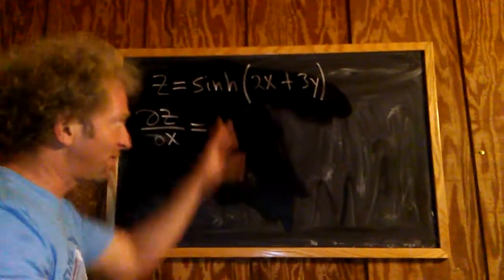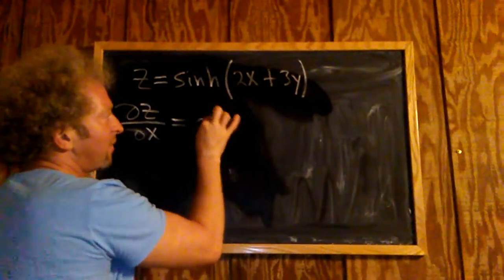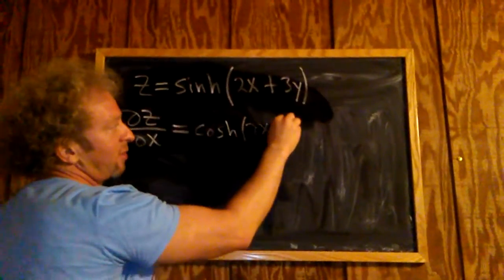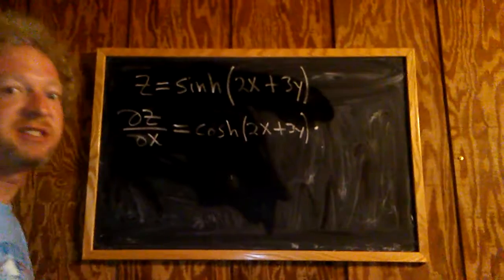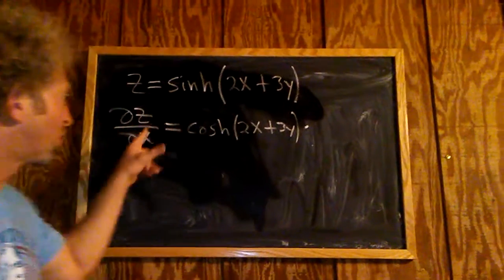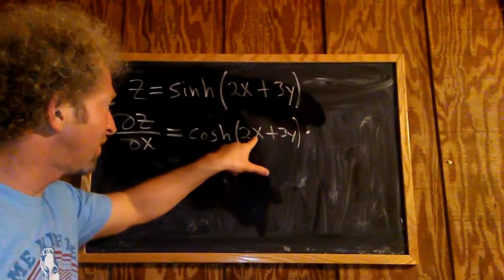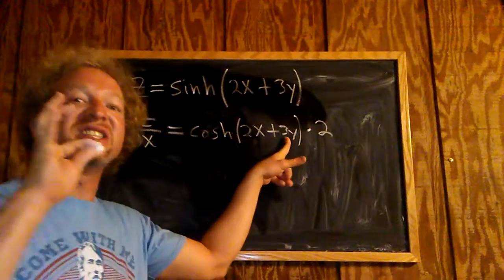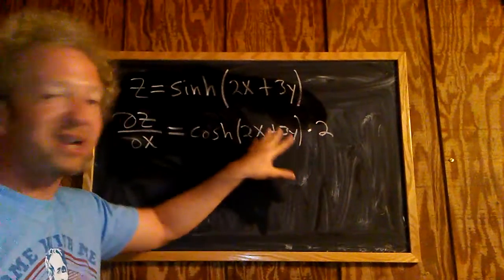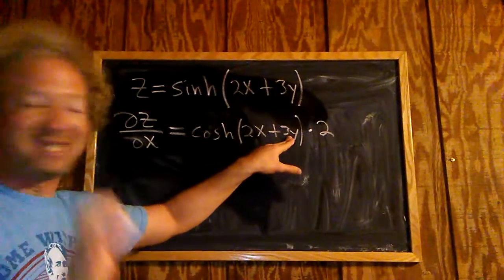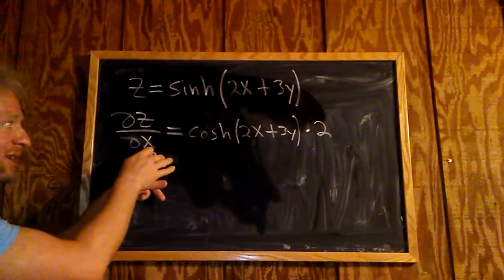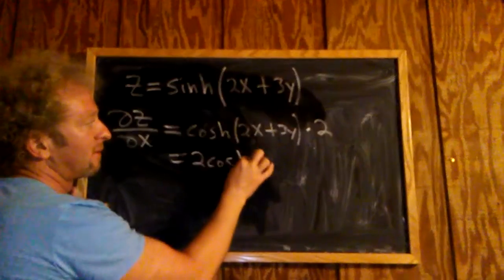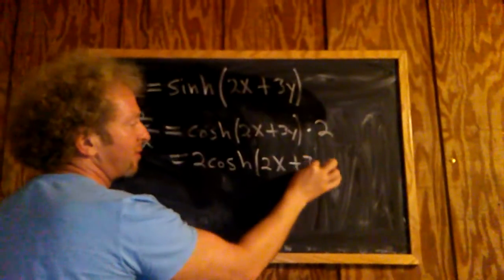The derivative of sine is cosine, so we have to use the chain rule here. This will be cosine — you don't touch the inside — so 2x plus 3y, times the derivative of the inside. We're taking the derivative with respect to x, so the derivative of 2x is simply 2. And the derivative of 3y is 0, because we're treating y as a constant. So the last thing to do is put the 2 in the front, and we get 2 cosine(2x + 3y).